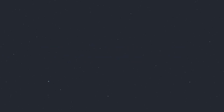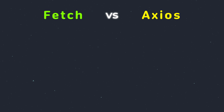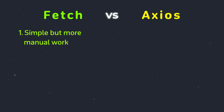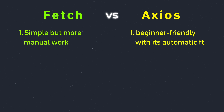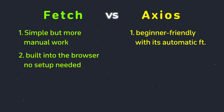Okay, let's compare the two. Here's what you need to know: fetch is simple but requires more manual work, while axios is more beginner-friendly with automatic JSON parsing and error handling. Fetch is built into the browser with no setup needed, whereas axios requires installation via npm or a script tag.